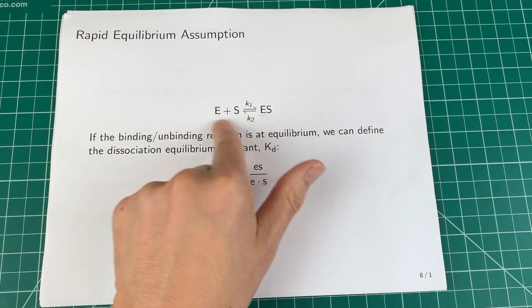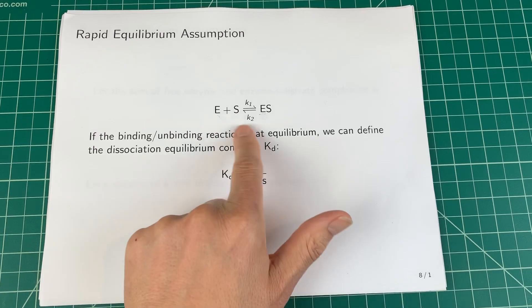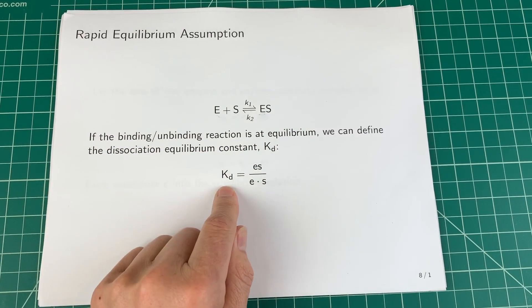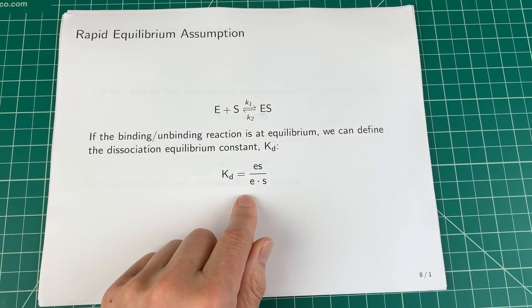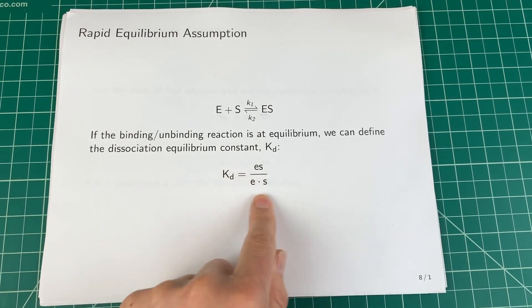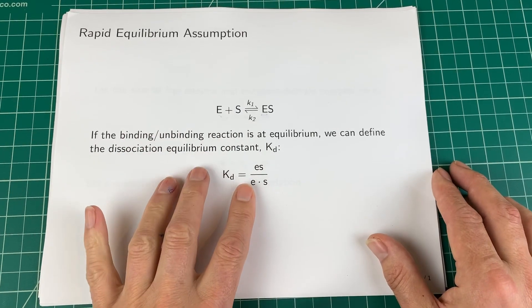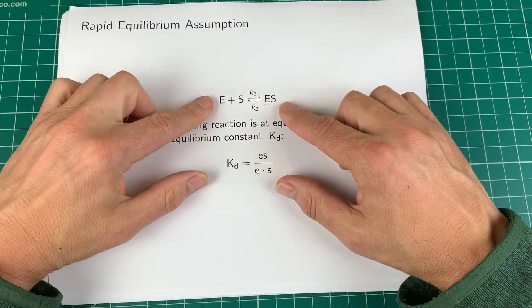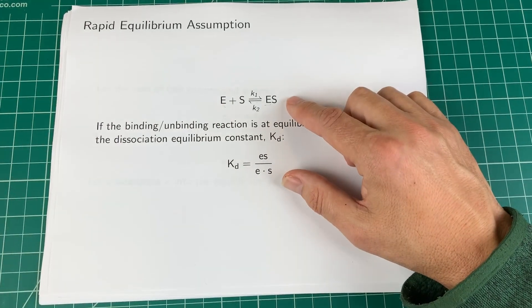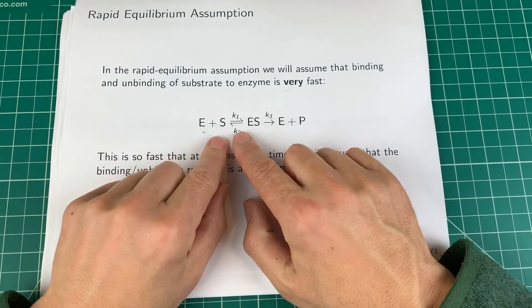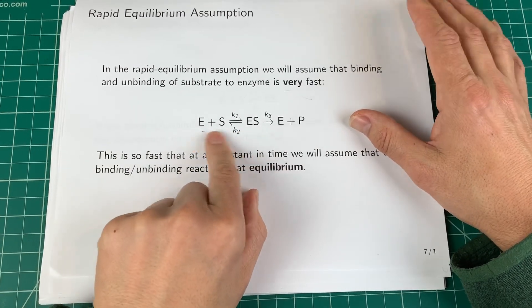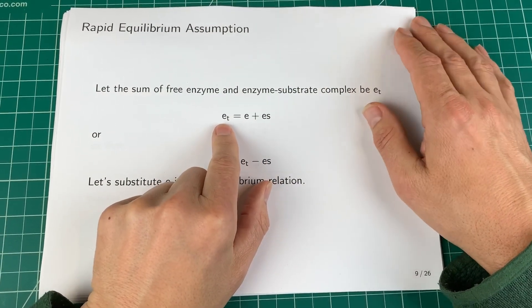If the binding is always at equilibrium, we can write down the equilibrium relationship. At any point in time, the ratio of E times S to ES is always equal to the dissociation equilibrium constant KD. This is the heart of the rapid equilibrium assumption. Also, this is a closed system — there's no new E coming in and no E leaving, so the total amount of enzyme is fixed: E_total equals free enzyme plus enzyme-substrate complex.